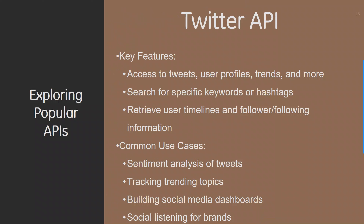Lastly, we explore popular APIs. Starting with the Twitter API, key features include access to tweets, user profiles, trends, and more. You can search for specified keywords or hashtags and retrieve user timelines and follower/following information. Common use cases include sentiment analysis of tweets, tracking trending topics, building social media dashboards, and social listening for brands.